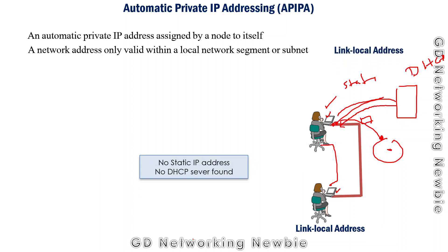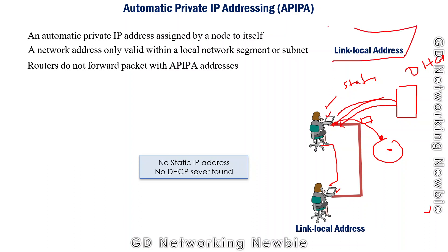That IP address is known as an Automatic Private IP Address, or APIPA — specifically used in Windows machines. This address is only valid within a local network, meaning routers will not forward it. It must stay within the same network segment. This is essentially a link-local address.